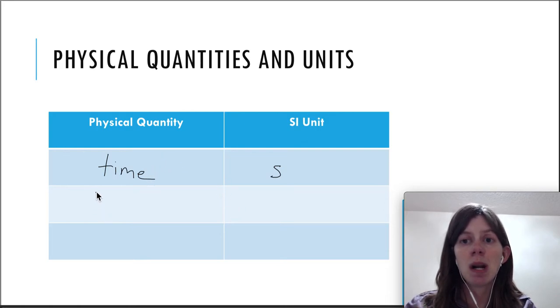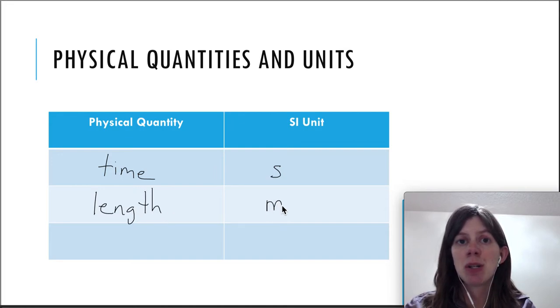The second quantity is length. You can think of this as a distance and it's going to be measured in meters. We're not going to be using feet or miles. And finally the last one is mass, measured in kilograms. You definitely want to know these three quantities and their units because we're going to be using them all the time.